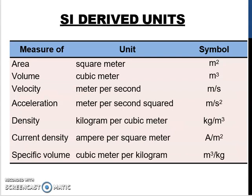Next is SI derived units, which is a combination of several SI units. To measure area the unit is square meter with symbol m². Volume is cubic meter m³, velocity is meter per second, acceleration is meter per second squared, density is kilogram per cubic meter, current density is ampere per square meter, and specific volume is cubic meter per kilogram.